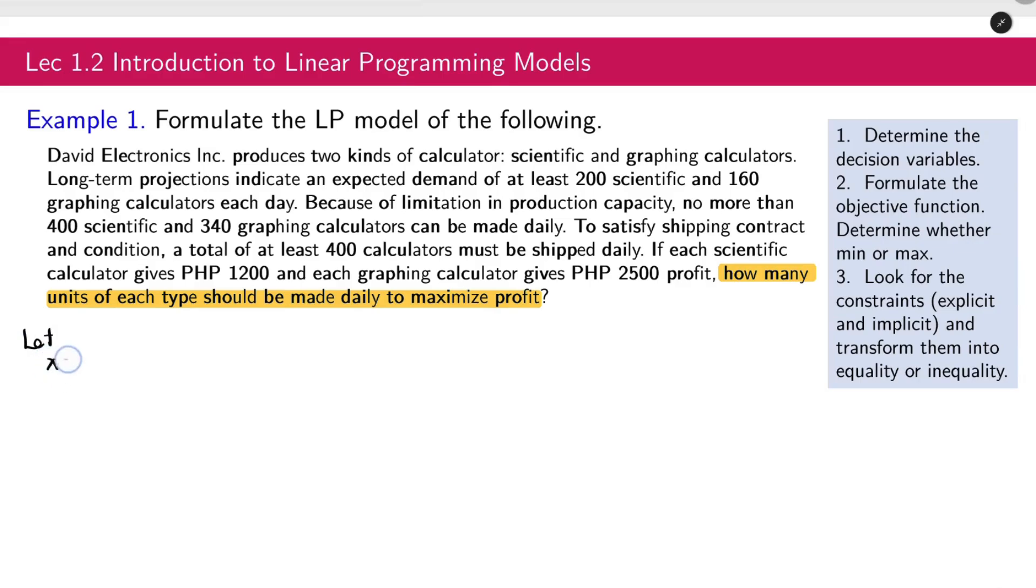How many units of each type should be made daily to maximize the profit? That's where we get the decision variable. Let x equal the number of units of scientific calculators to be produced. And similarly, y can be x1 or x2. We have x and y. For x, we have number of units of scientific calculators. And for y, number of units of graphing calculators.